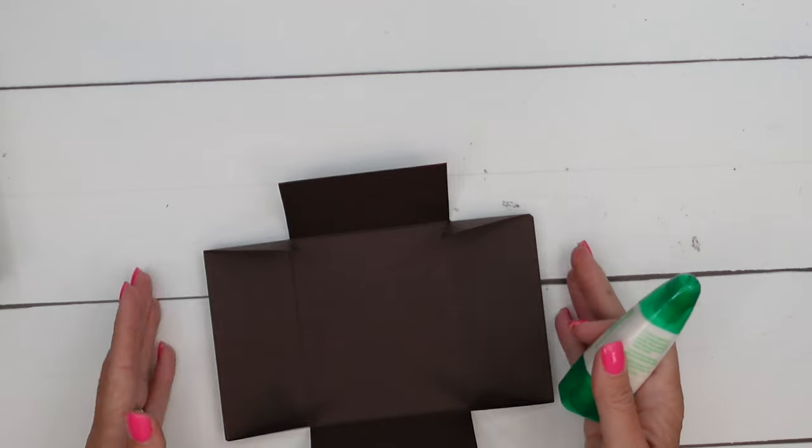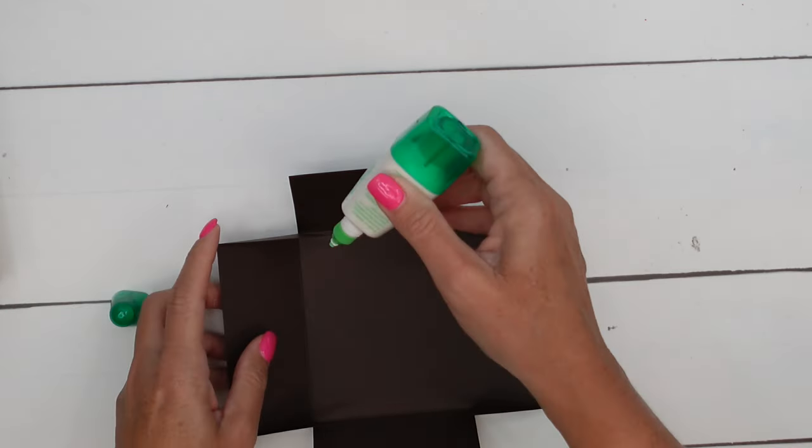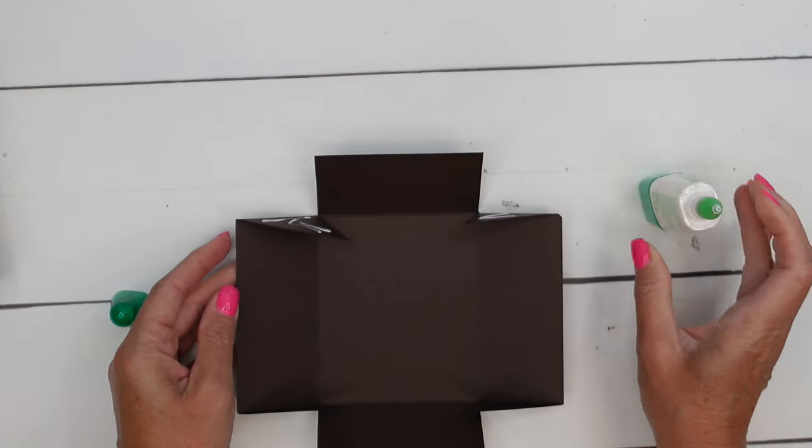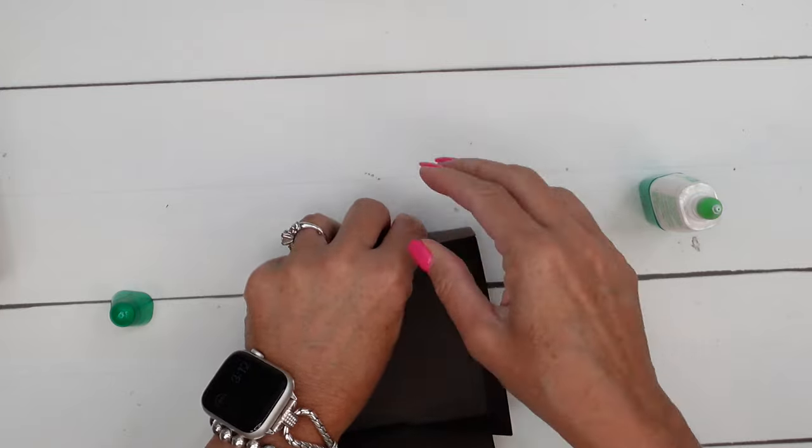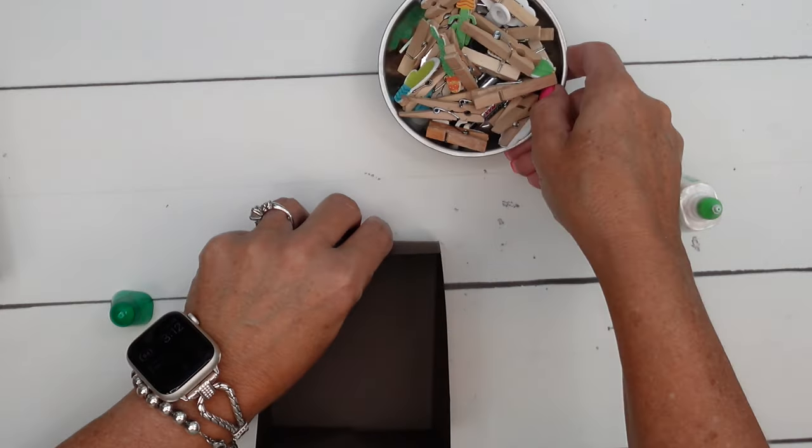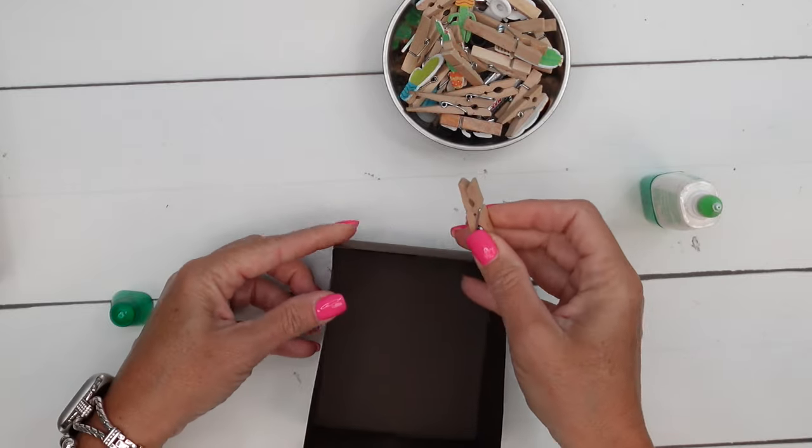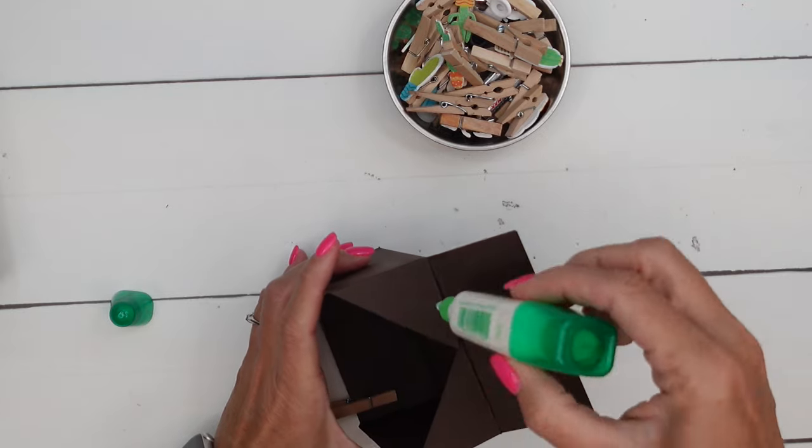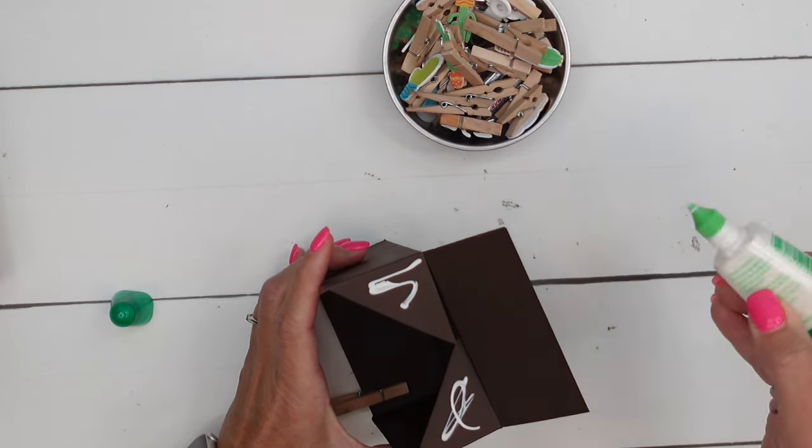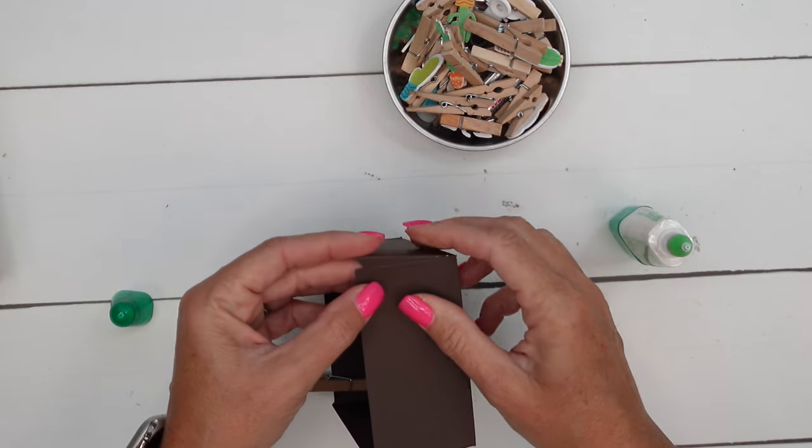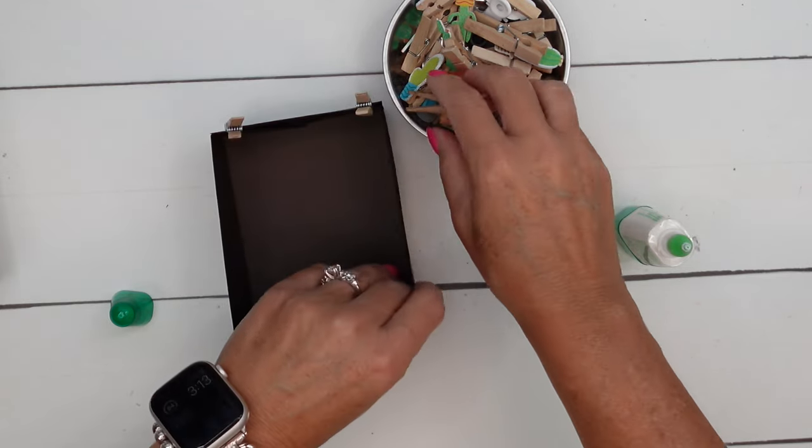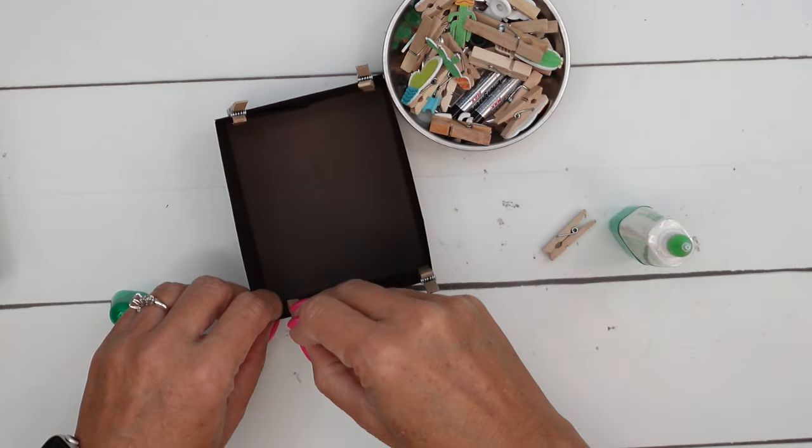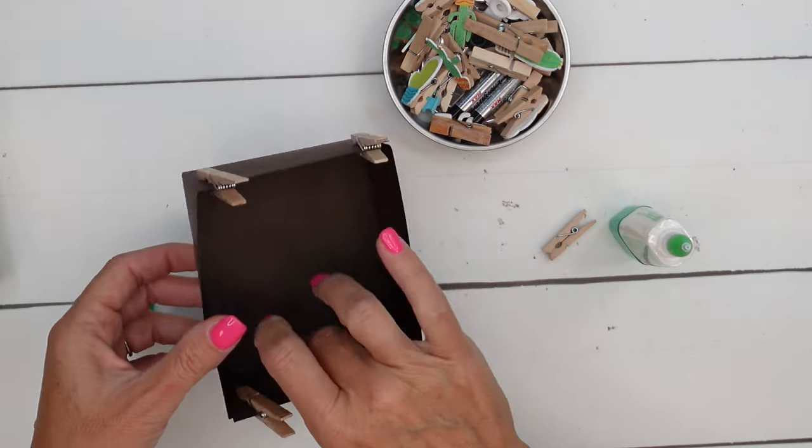Now fold in everything like this and we're going to put adhesive on these triangles that we have. And we're going to fold them in to that side. Now I have a bunch of little mini clothespins here that I use to hold my boxes closed until they are dry. You want to make sure that the sides all meet the sides, nice and square. And then we'll set that one aside to dry.